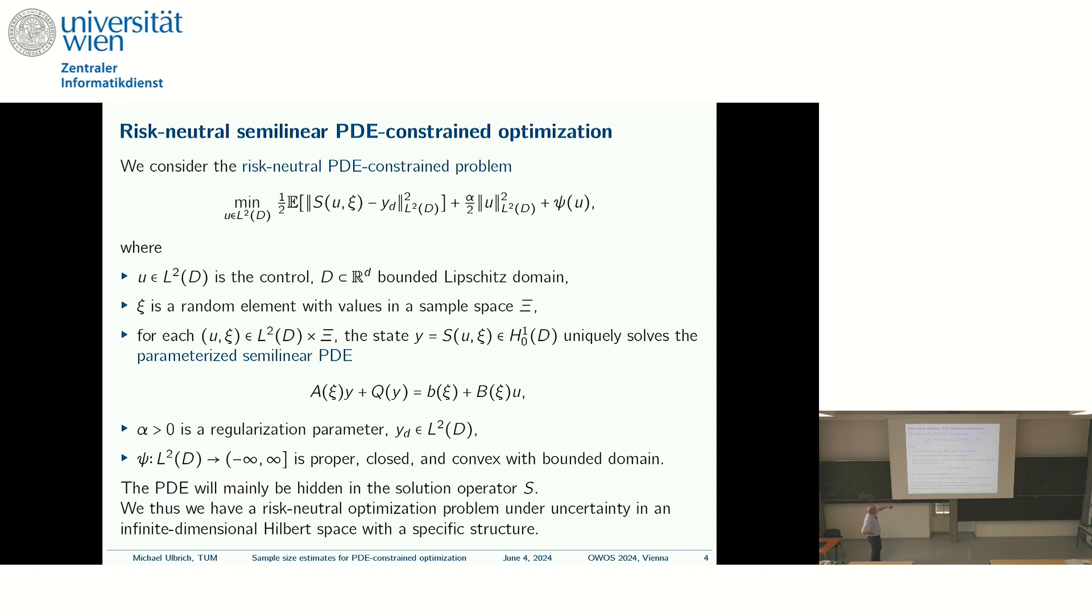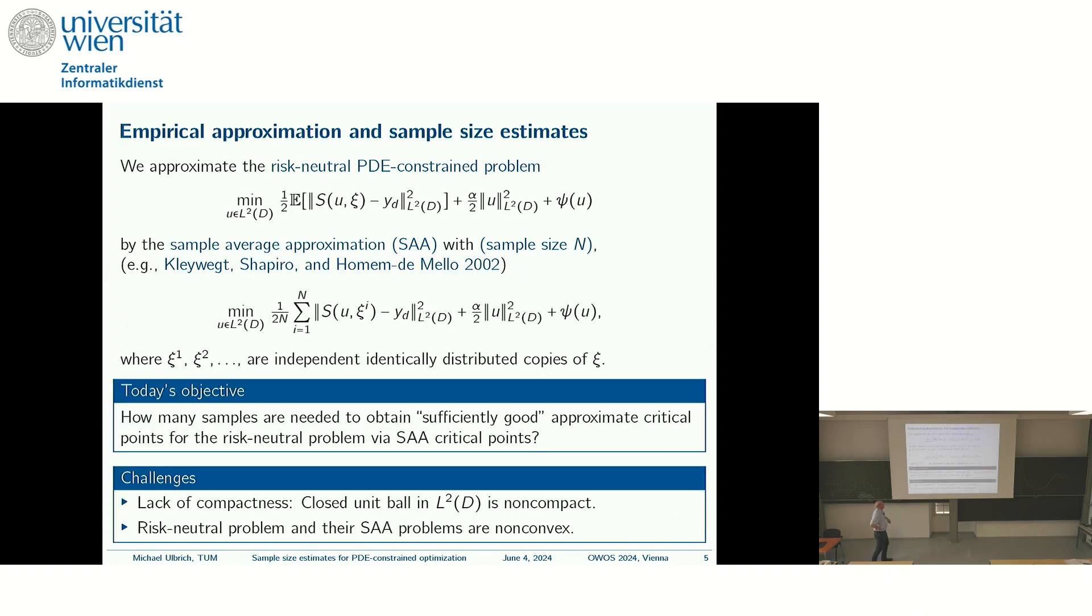One wants to control the PDE such that the corresponding state matches as good as possible a desired state. And since the state is a random variable because we have this random input, we use here the simplest way of making this deterministic, applying the expectation. Further steps would then be to use more advanced risk measures. Then, also typical for optimal control, we have here an L2 regularization. And here, this is a further regularization term where we can enforce structure and the Psi is convex, proper, closed, and extended real value. So, it could encode also control constraints.